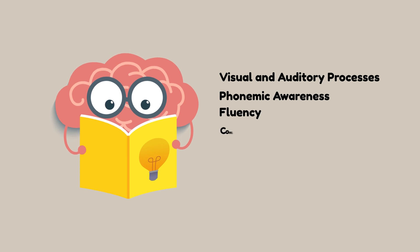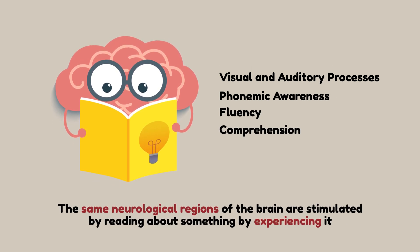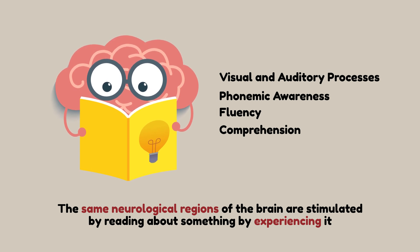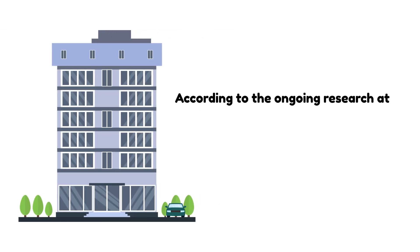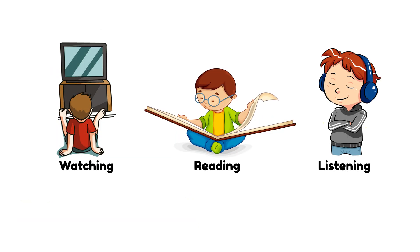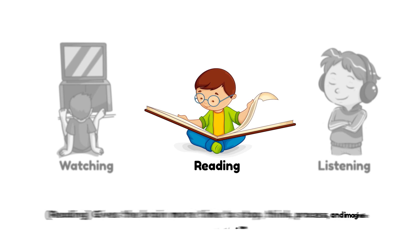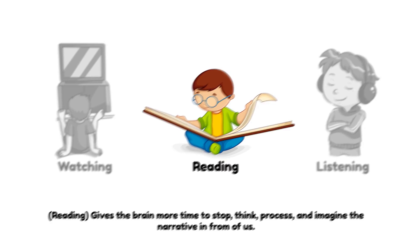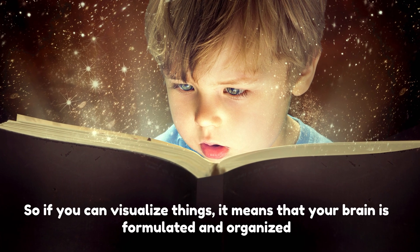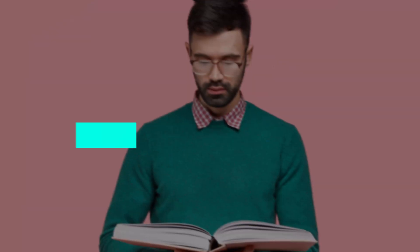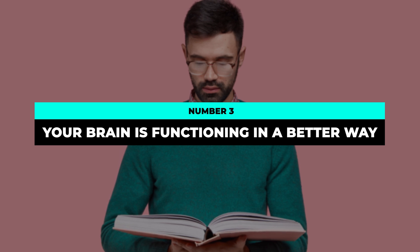Reading involves several brain functions including visual and auditory processes, phonemic awareness, fluency, comprehension, and more. The same neurological regions of the brain are stimulated by reading about something as by actually experiencing it. According to ongoing research at Haskins Laboratories for the science of the spoken and written word, reading — unlike watching or listening to media — gives the brain more time to stop, think, process, and imagine the narrative. So if you can visualize things, it means your brain is well-organized.